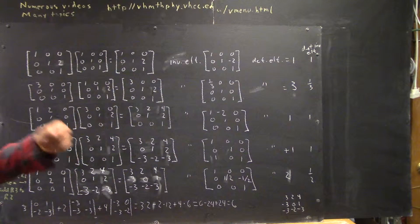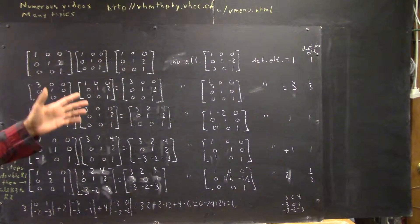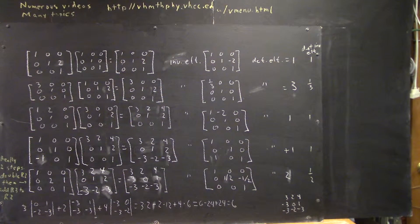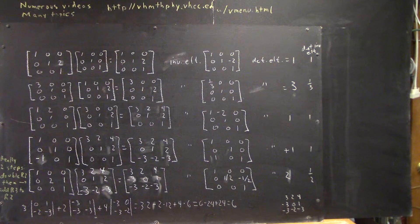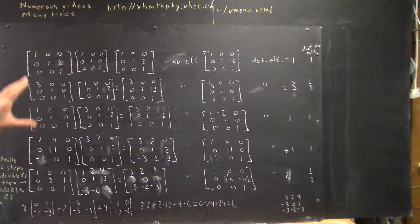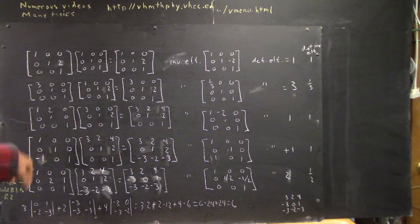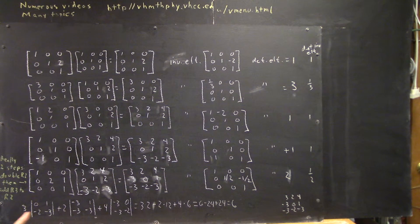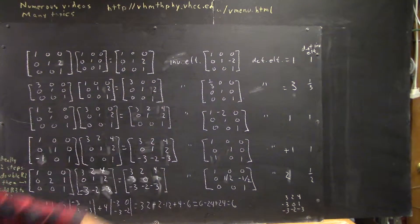Now let's look at the details — the overview is there. Let's say a little bit more about how we do these products, what all this might mean, and why we bother keeping track of the inverse elementary matrices.